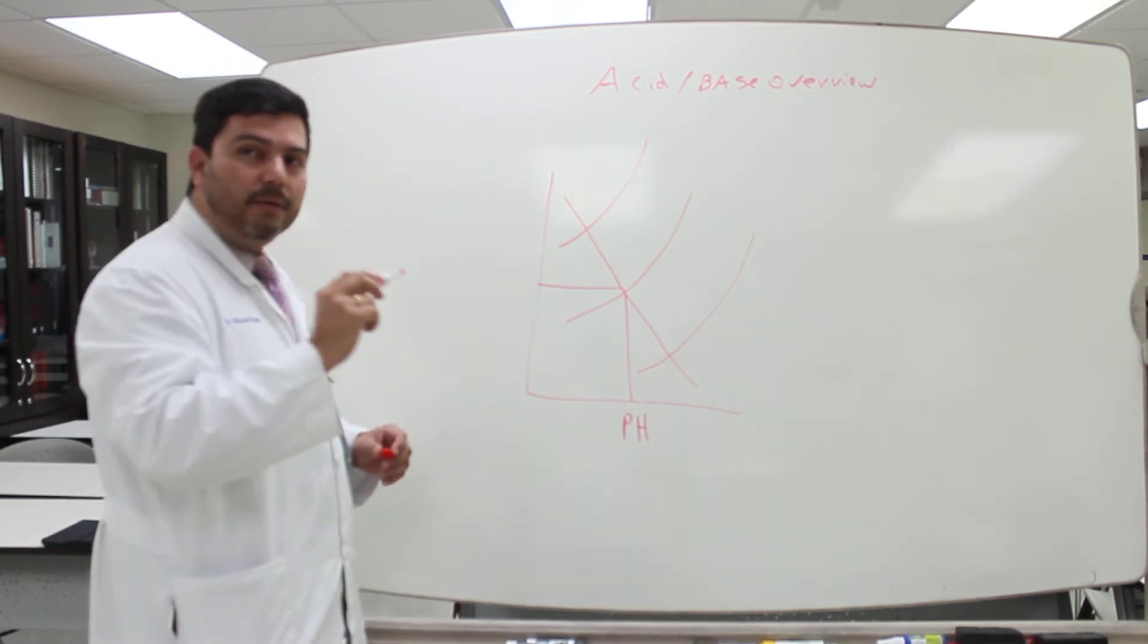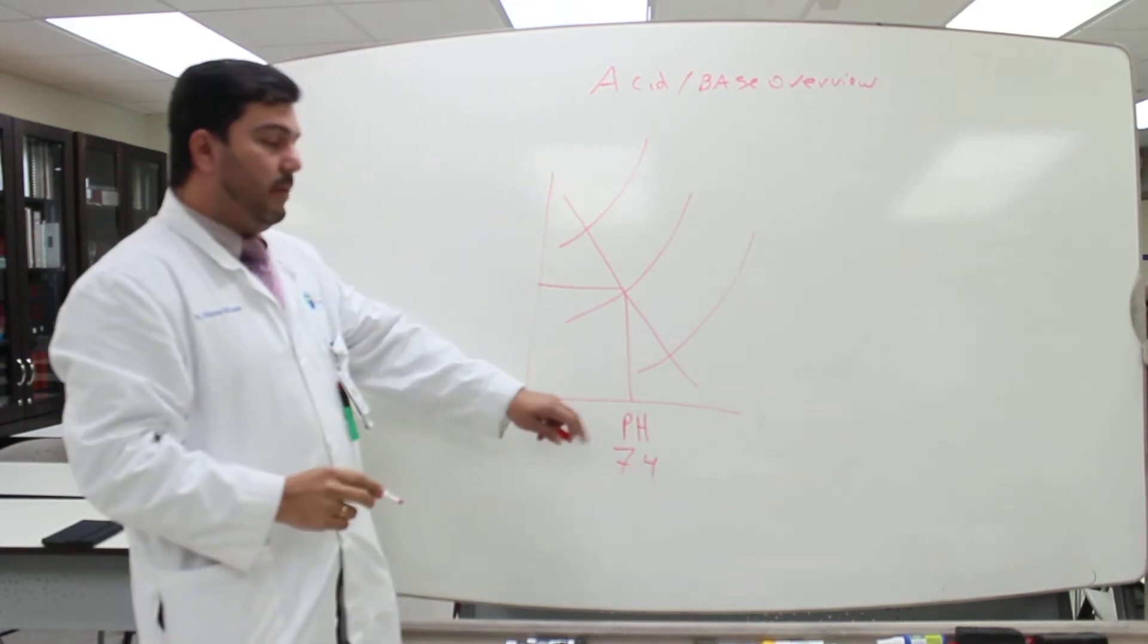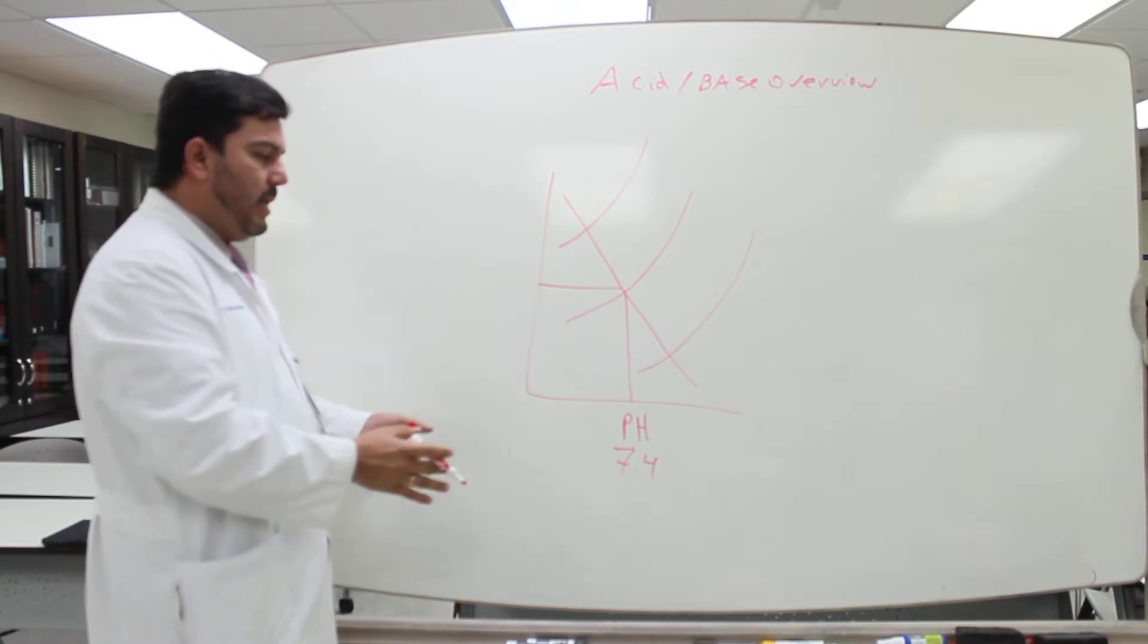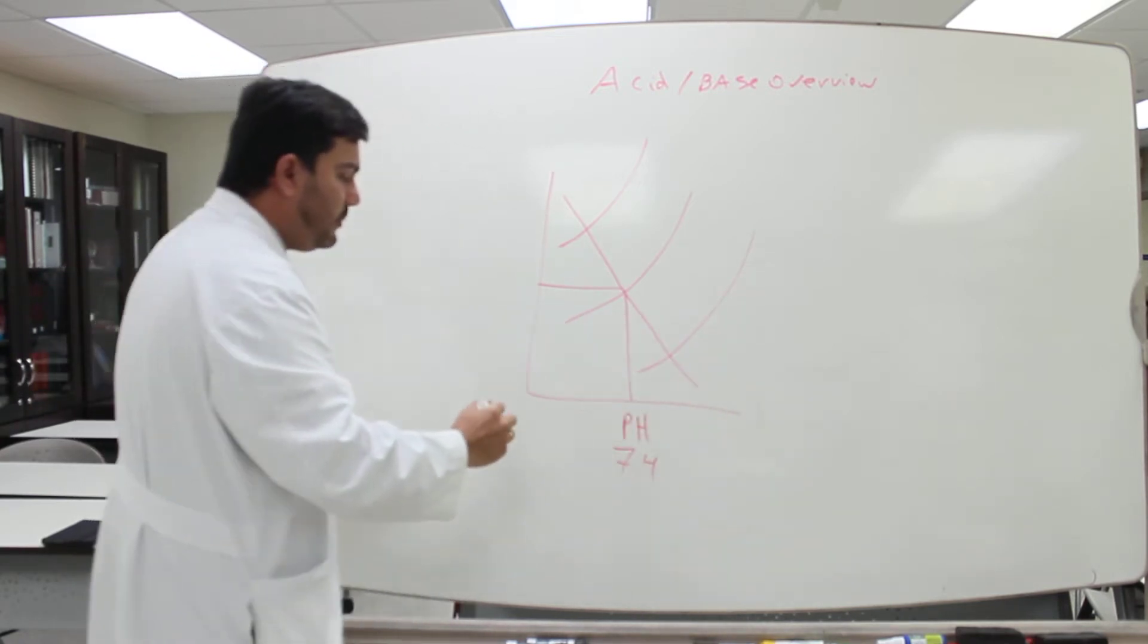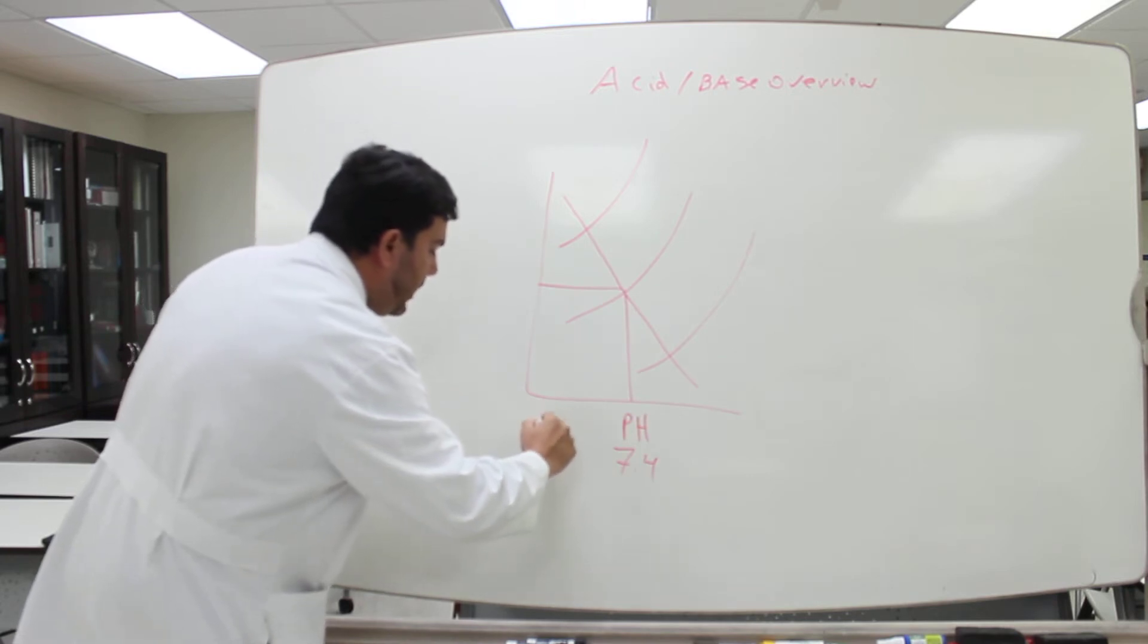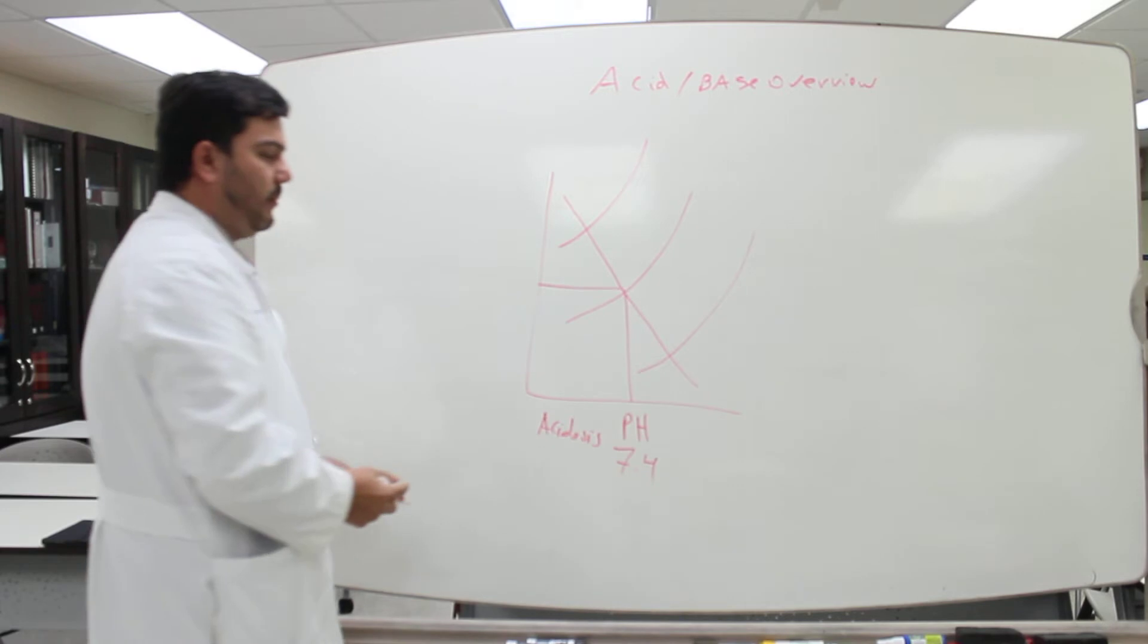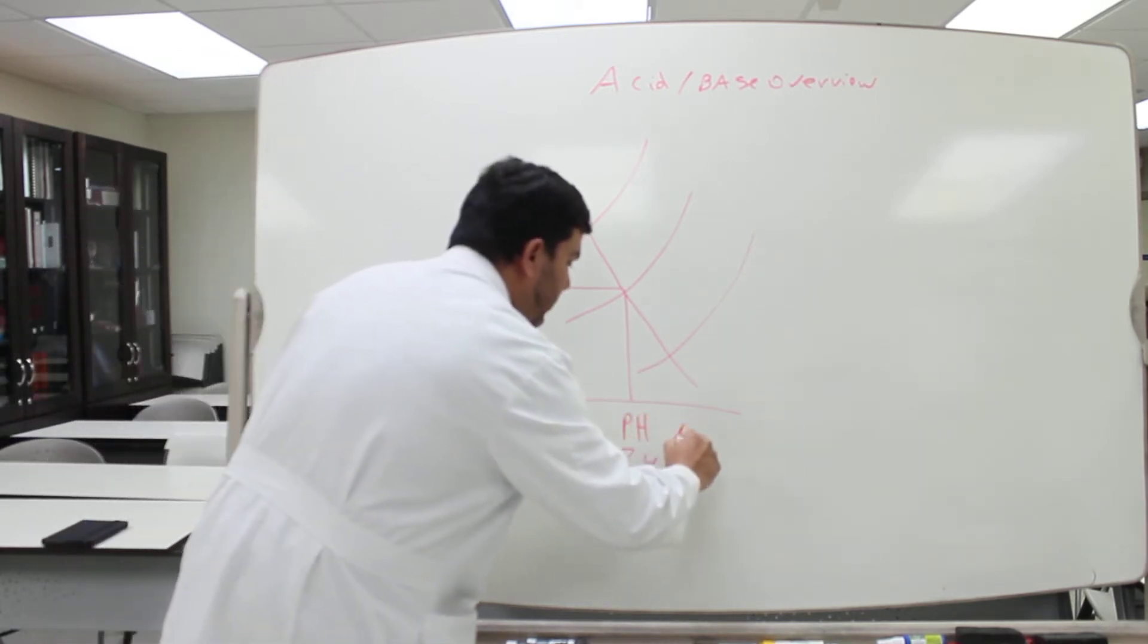This is the normal value. And then this will give you if the patient has acidemia or alkalemia. Let's imagine the patient has acidosis. You have to check this side. And then the patient has alkalosis.